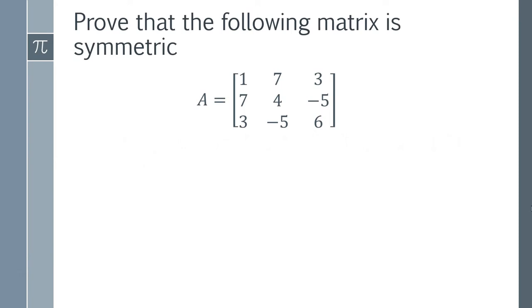We've got a matrix A, and we want to prove that this matrix is in fact symmetric. Our first step is to find A transpose. To find A transpose, you simply turn each row into a column.